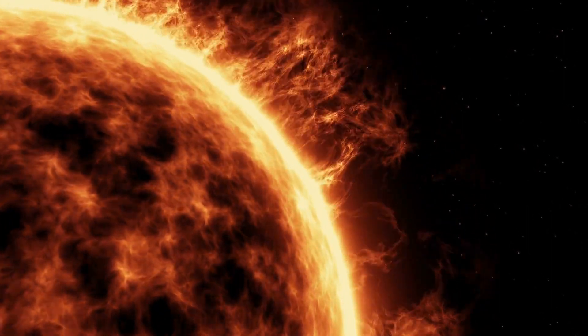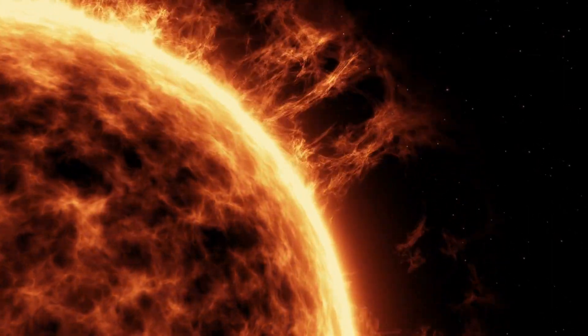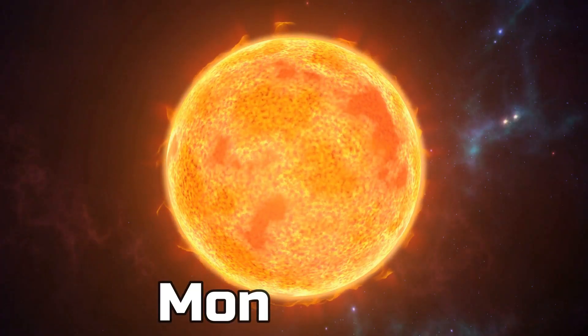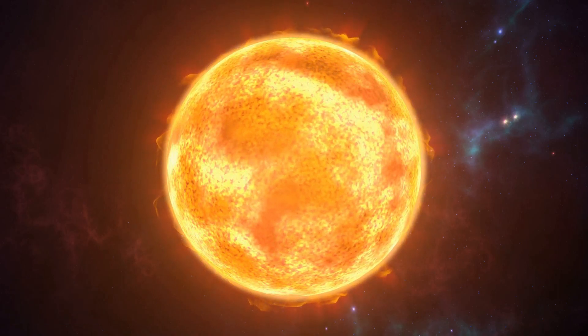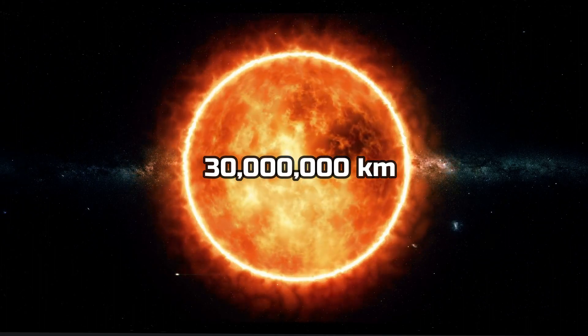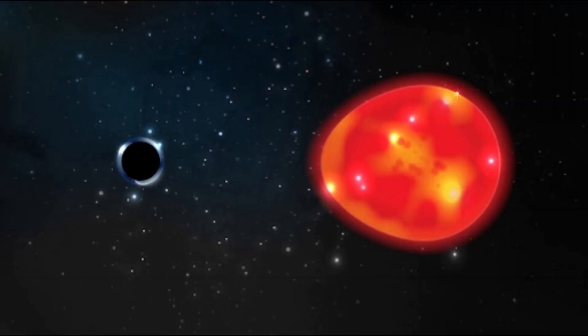So with the Sun we can't really get much done. Let's get to bigger things. V723 Mon, a giant Sun that's 25 times bigger than our own Sun, meaning 30 million kilometers in diameter. But this giant star is rotating around a 17 kilometer black hole.